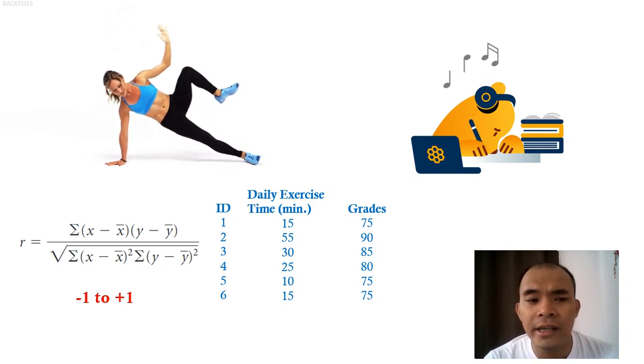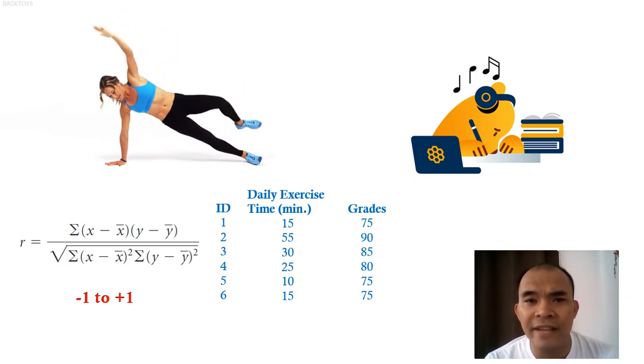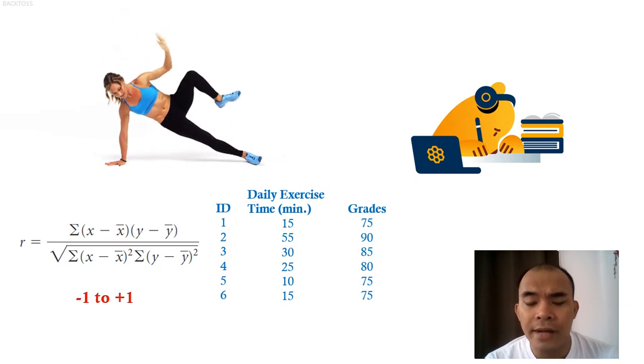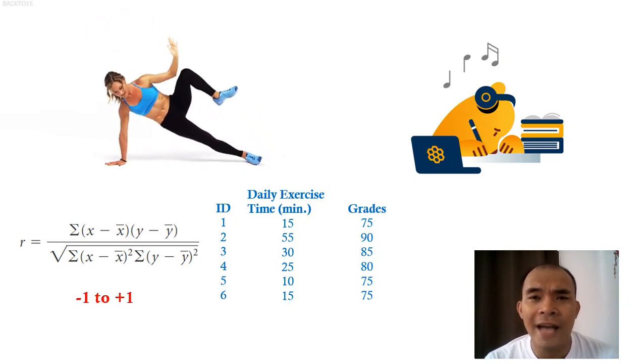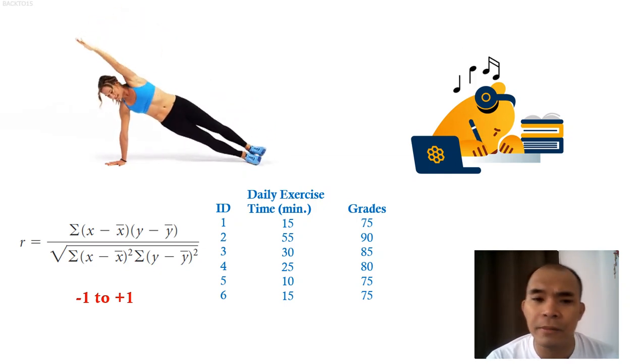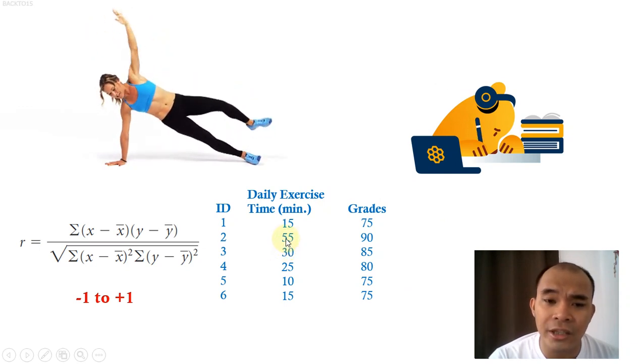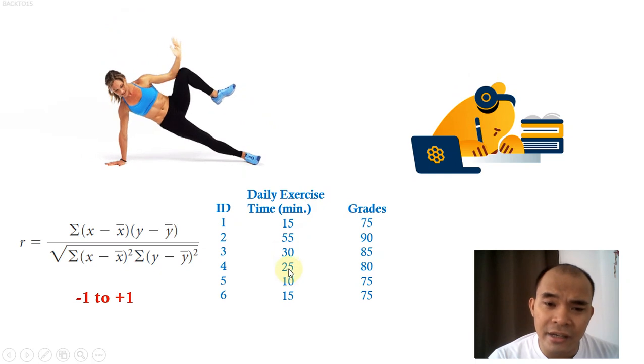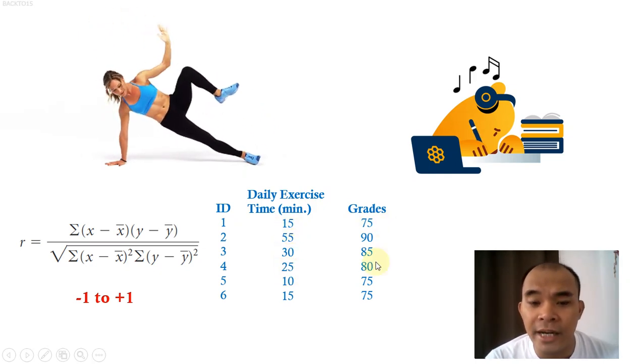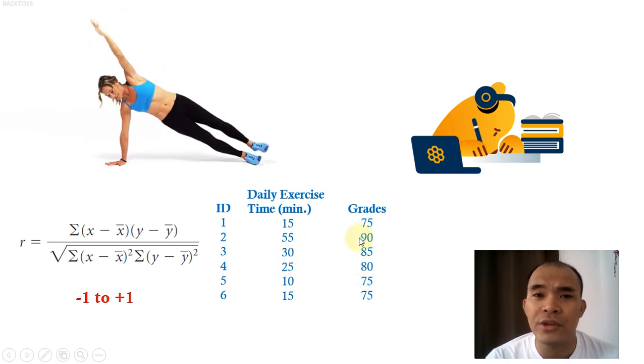Negative r indicates that the two variables have negative relationship. It means that an increase in a particular variable will result in a decrease in another variable. So for example here, if the computed correlation coefficient in this scenario is negative, we can say that an increase in daily exercise time will result in a decrease of your grades, or an increase in daily exercise time will increase your grades.